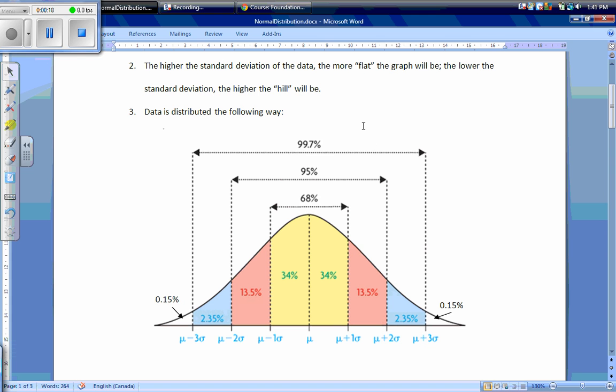The second is that the standard deviation of the data—if the standard deviation of the data is high, the more flat our curve will be. If the standard deviation of the data is low, our hill will look really high.